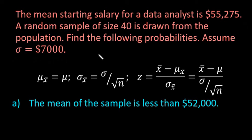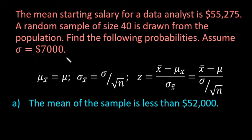Hi, for this video what I want to do is show you how to find the probability of the means of a sampling distribution of sample means. What we have is the mean starting salary for a data analyst is $55,275. A random sample of size 40 is drawn from the population, and we're going to find the following probabilities assuming that the population standard deviation sigma is equal to $7,000.